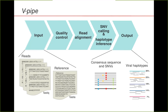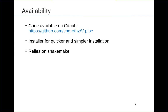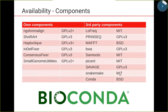Haplotype reconstruction can be done either at the local level inside windows, or at the global level over the whole genome of the studied virus. The code of this pipeline is publicly available, and recently we introduced a new installer to make installation much simpler and quicker. This pipeline relies on Snakemake, which brings several interesting properties. We have ensured that all elements of our pipeline — both those developed inside our group and all third-party components — are available as Bioconda packages, so Snakemake can automatically download and deploy them as needed.